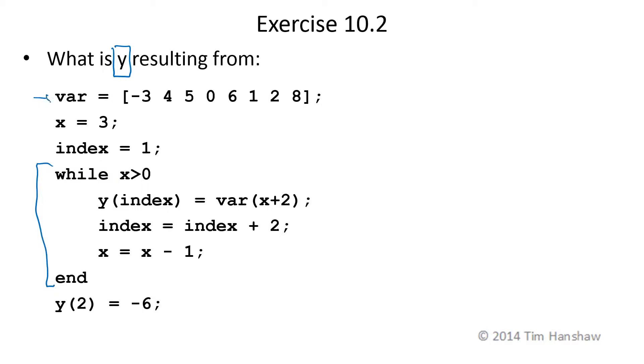So we initialize var as this. So var is an array. This would be the first element of var, which will be var of 1. This is the second element of var, which is var of 2. The third element of var is 5.